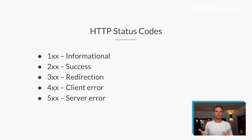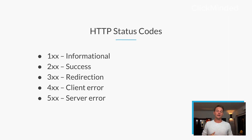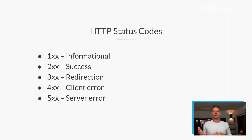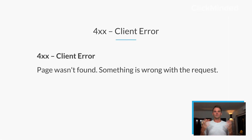The 100 block — these are informational requests. The 200 block — those are successful requests. The 300 block is for redirects and redirection. The 400 block will be for client errors, and the 500 block will be for server errors.